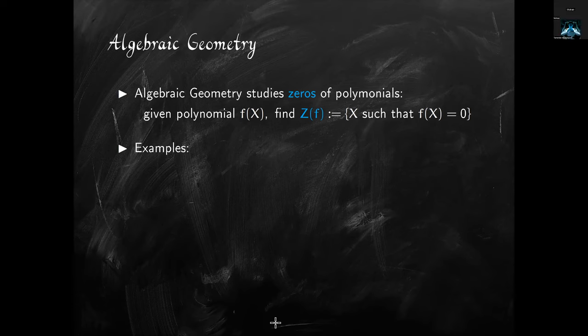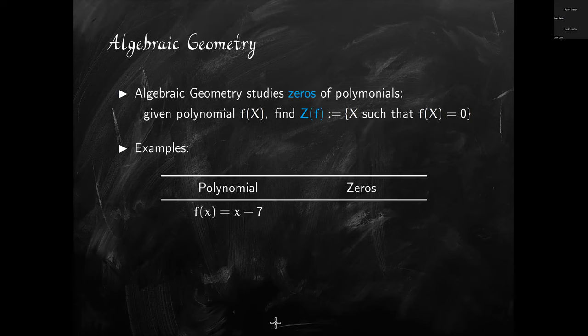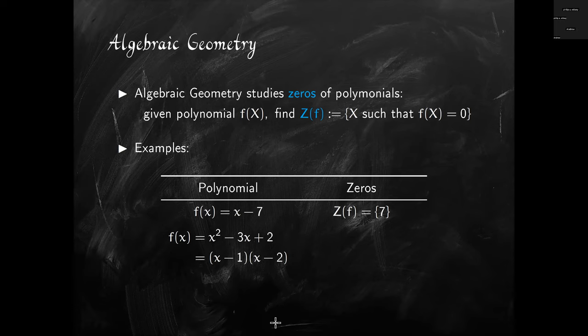Let us look at examples — lots of examples. The first polynomial we shall look at is x minus 7. This polynomial is zero only when x equals 7, and non-zero for any other value. Next, consider x squared minus 3x plus 2. To find its zeros, we do some simple high school algebra and factor it as (x minus 1)(x minus 2). So the zeros are x equals 1 and x equals 2.